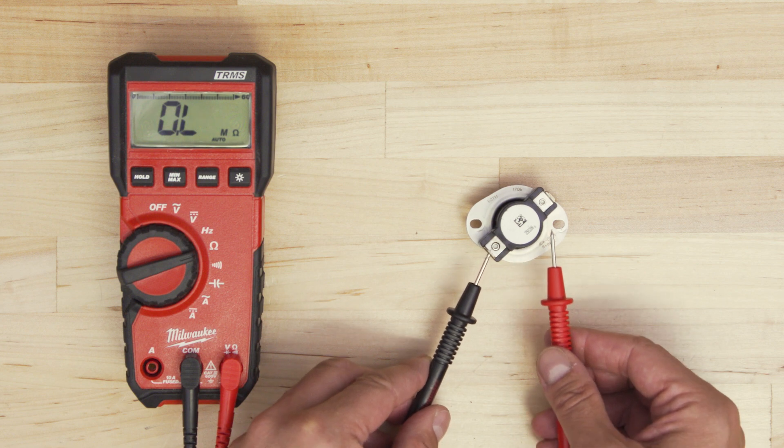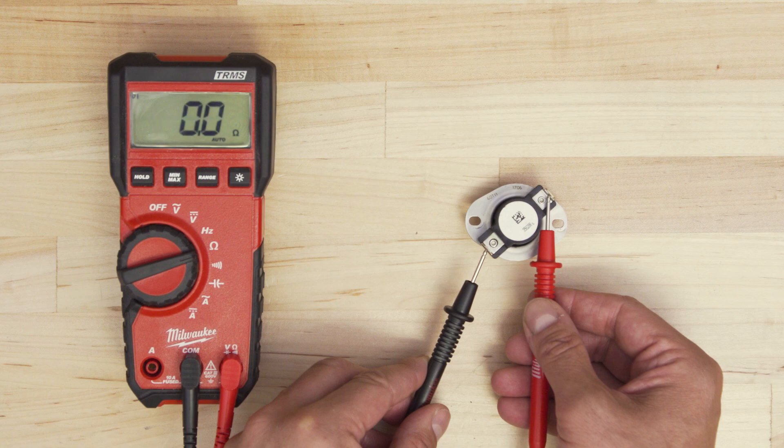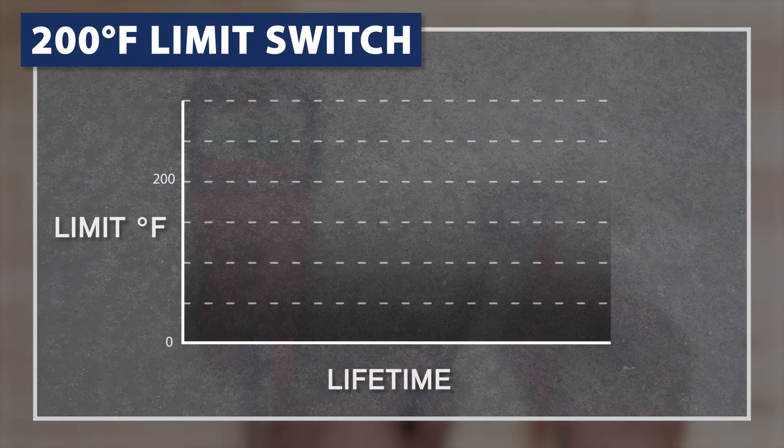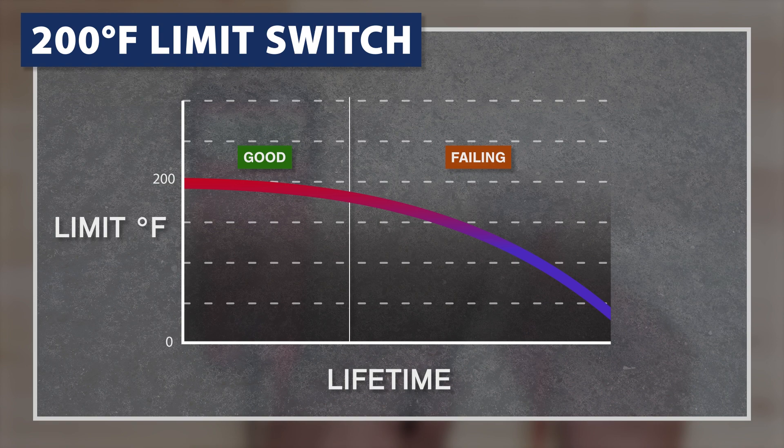Keep in mind that even if a limit switch has continuity, it doesn't mean that it's functioning correctly. As the switch wears down, it can open at lower and lower temperatures, and can cause an appliance to shut off before it fully heats up.